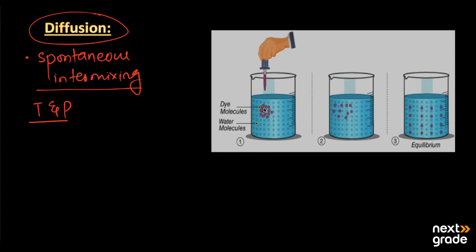Here is a simple example: we have water in a container and we place dye molecules into it. After some time, we see that these molecules start to scatter throughout the container. Eventually we reach a stage known as the equilibrium stage — the complete, uniform distribution of molecules. This is diffusion.